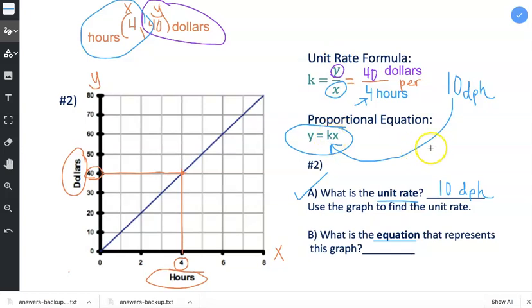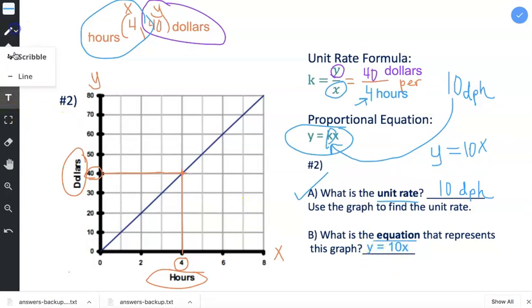And I replace k with the unit rate. So I record the y, the x, the equal sign, but instead of k, I plug in 10 because we found k to be 10. And then I'll try to type this neatly down here. So y = 10x is our equation. So we have completed part A and part B.